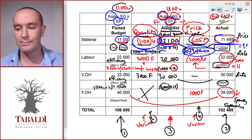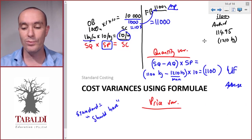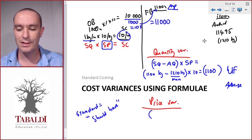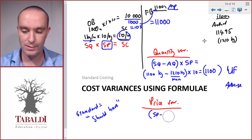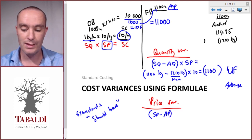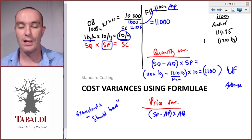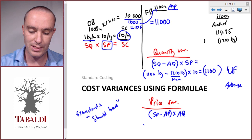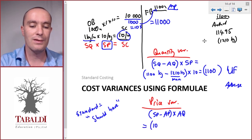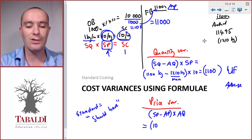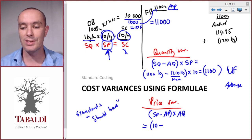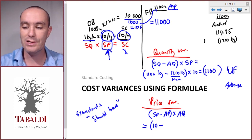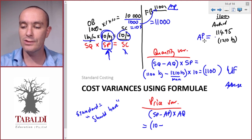For the price variance, the formula is: standard price minus actual price, multiplied by actual quantity. Standard price is $10 per kilogram from the standard cost card. The actual price per kilogram wasn't directly given, so we calculate it as total actual cost divided by actual kilograms used, which gives $9.50.